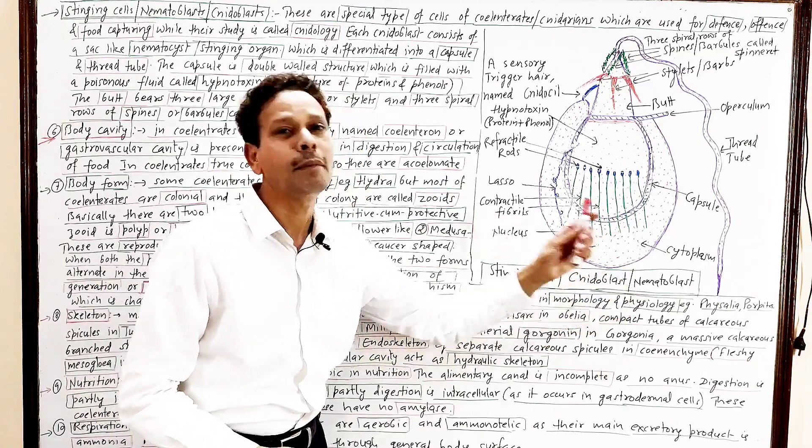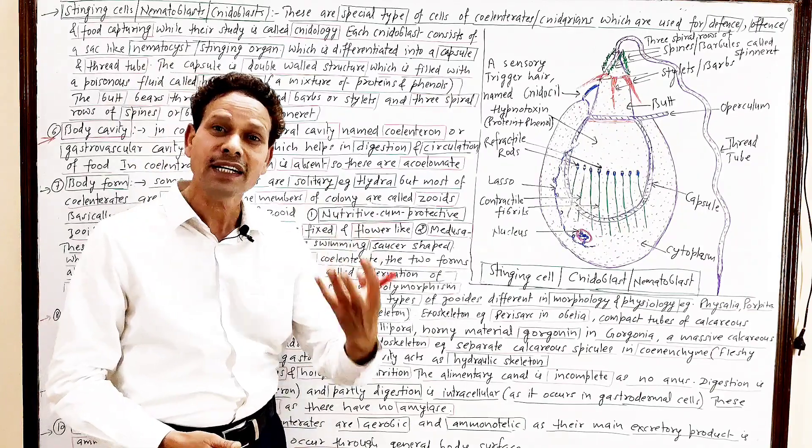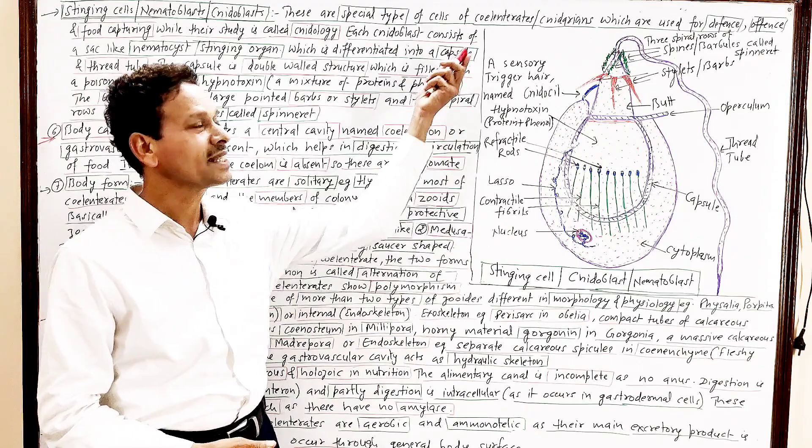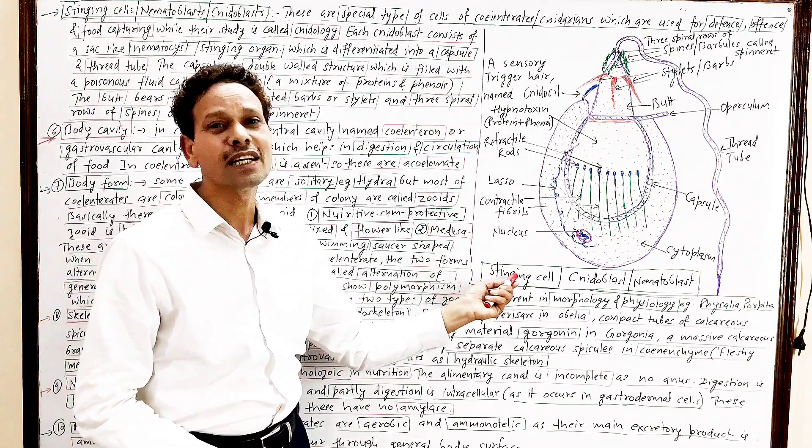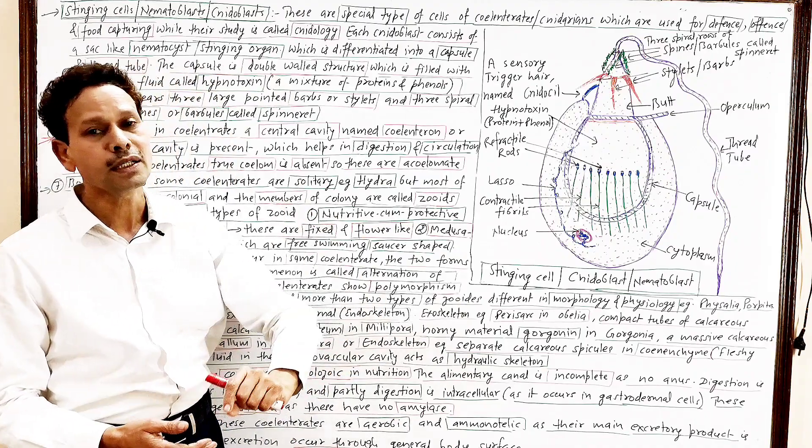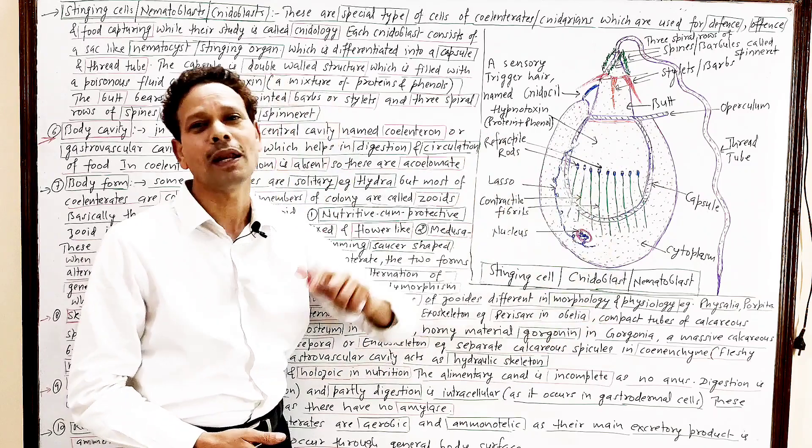Nidoblast, nematoblast, these are special type of cells which are characteristic features of this phylum Coelenterata and these cells, stinging cells, which are used for defense, for offense and food capturing.